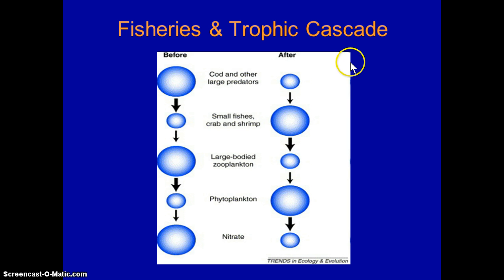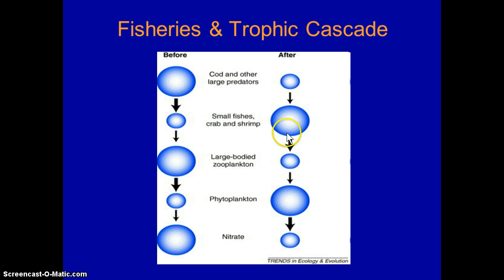And essentially it should be relatively intuitive. And by now you should sort of be thinking in these terms anyway. The idea of a trophic cascade is that if you affect one part of the food chain, the effects can cascade down, and by affecting one portion of the food chain you can affect portions of the food chain further away than one trophic level because of the cascading effect.